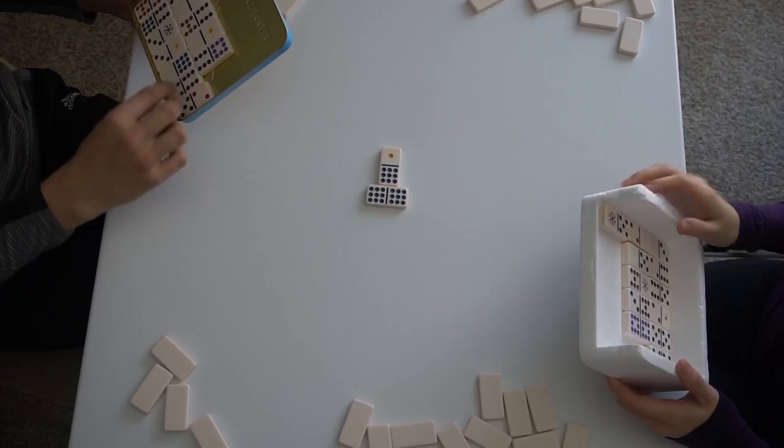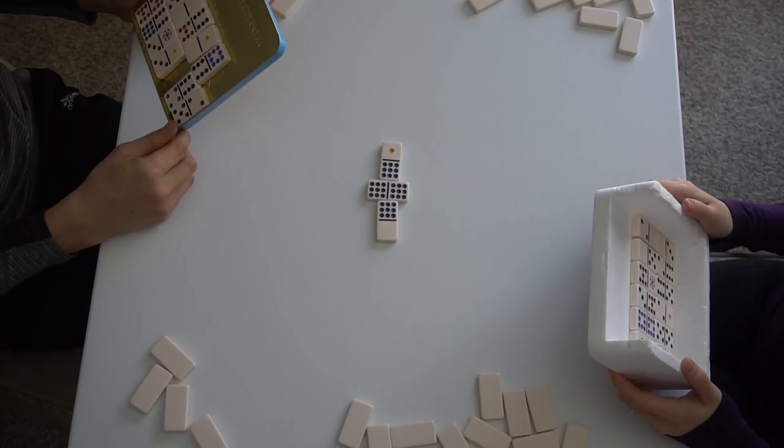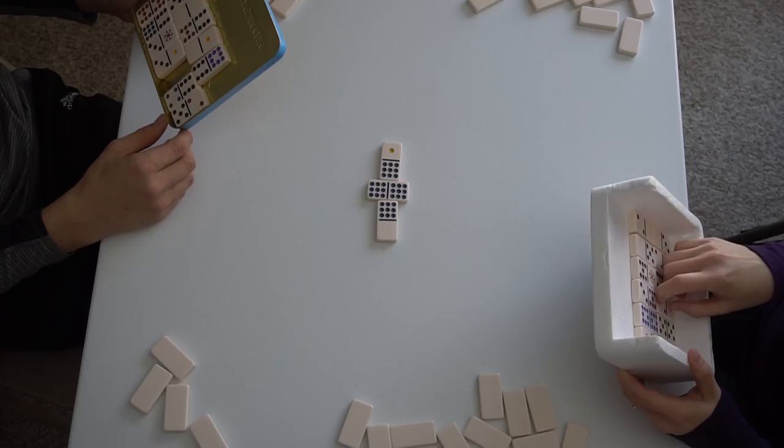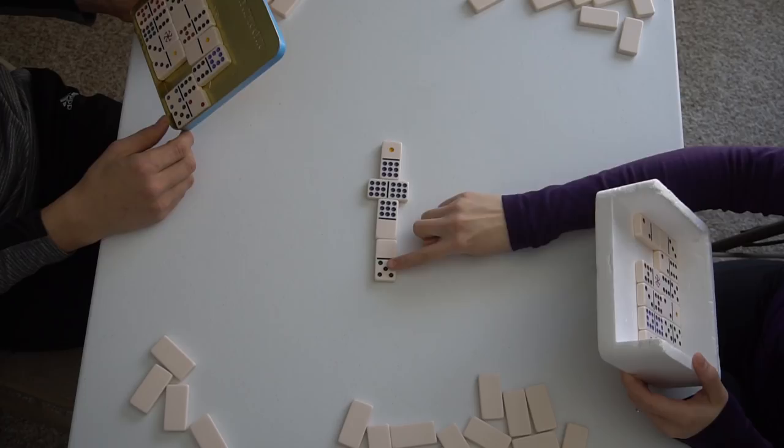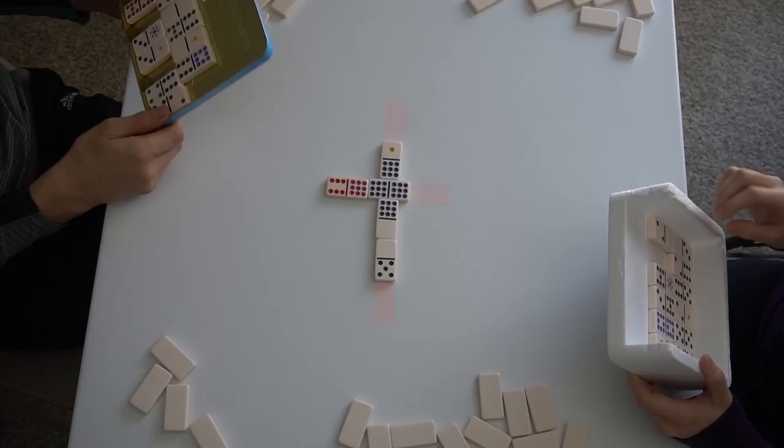Once the first double is placed on the table, the next two players have to place their dominoes on either side of it. To do that, one side of your domino must have the same number as the one on the table, or you can use a domino with a spinner if you have it. After those initial three dominoes are placed, every player can now take turns putting down any matching dominoes from their hand onto any of the endings.